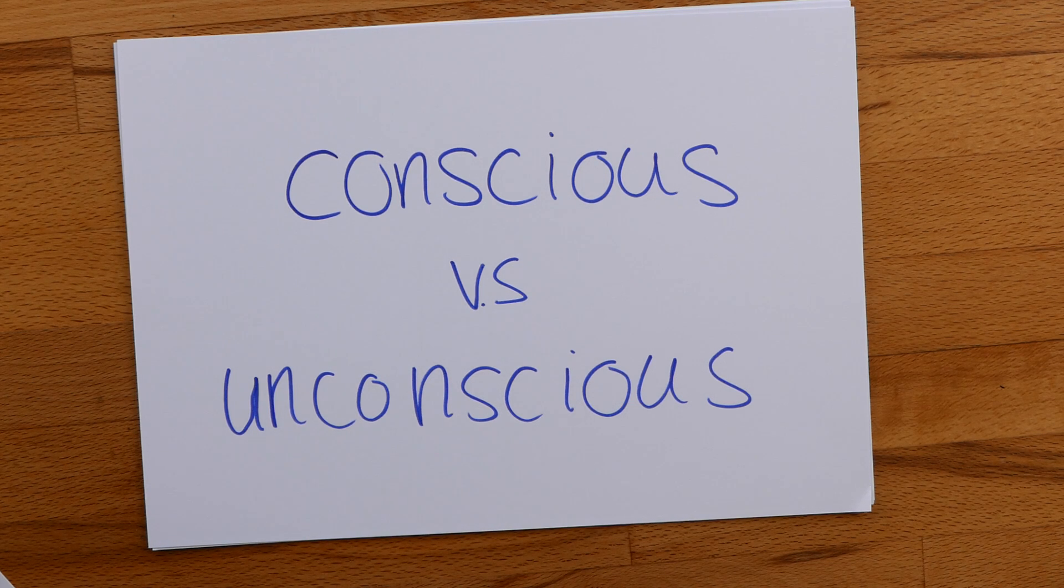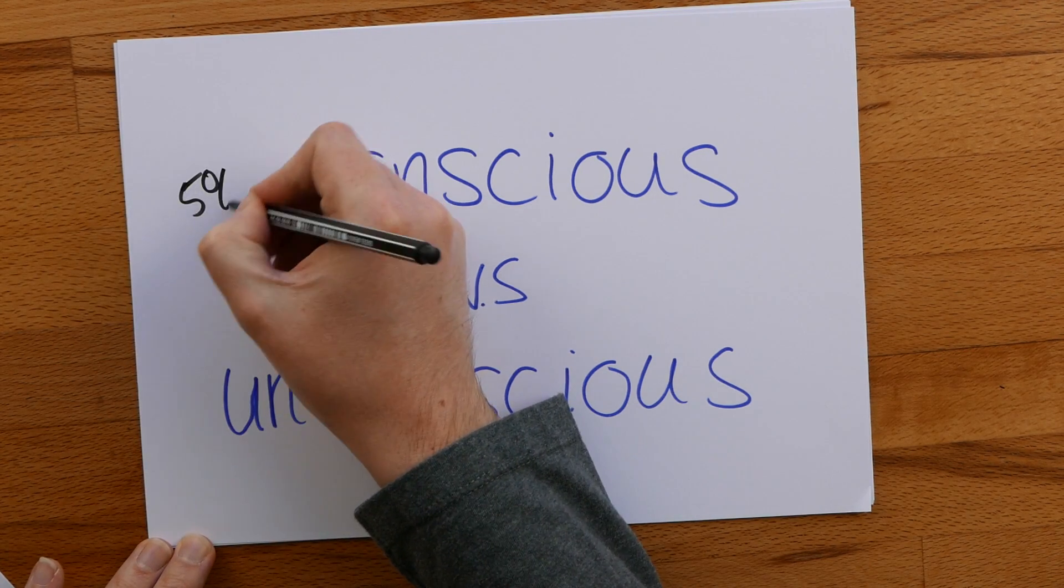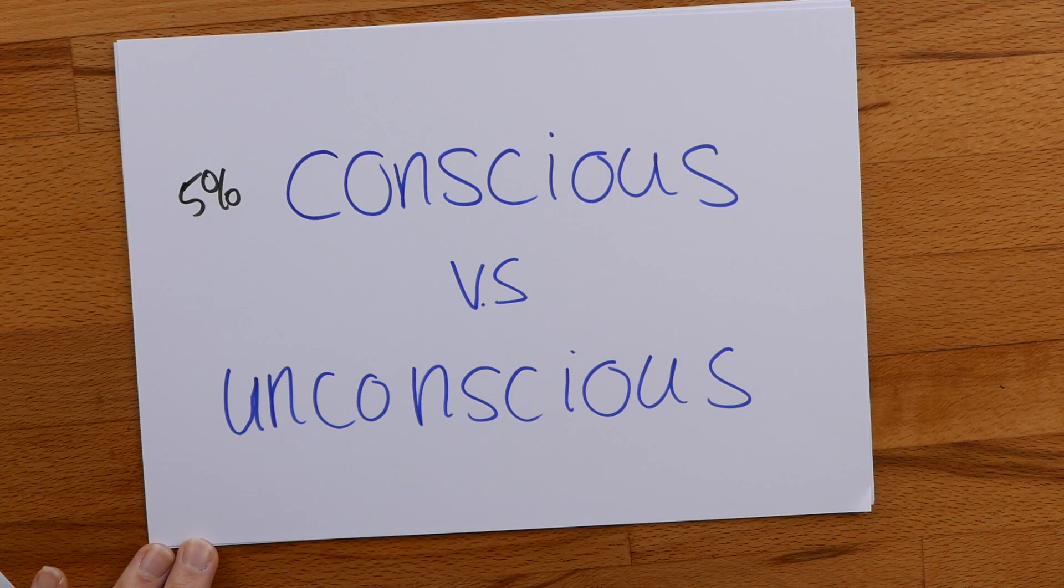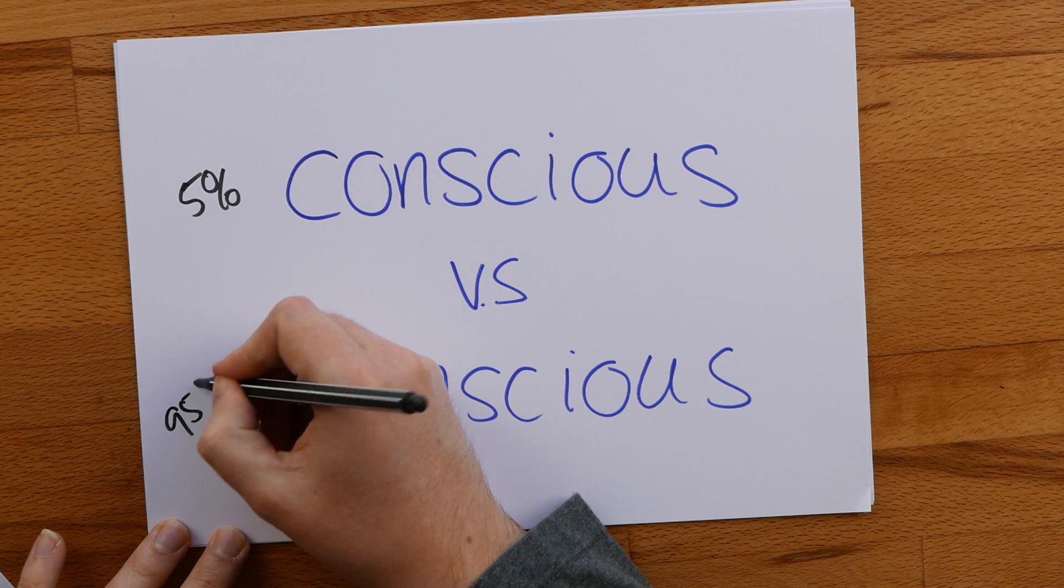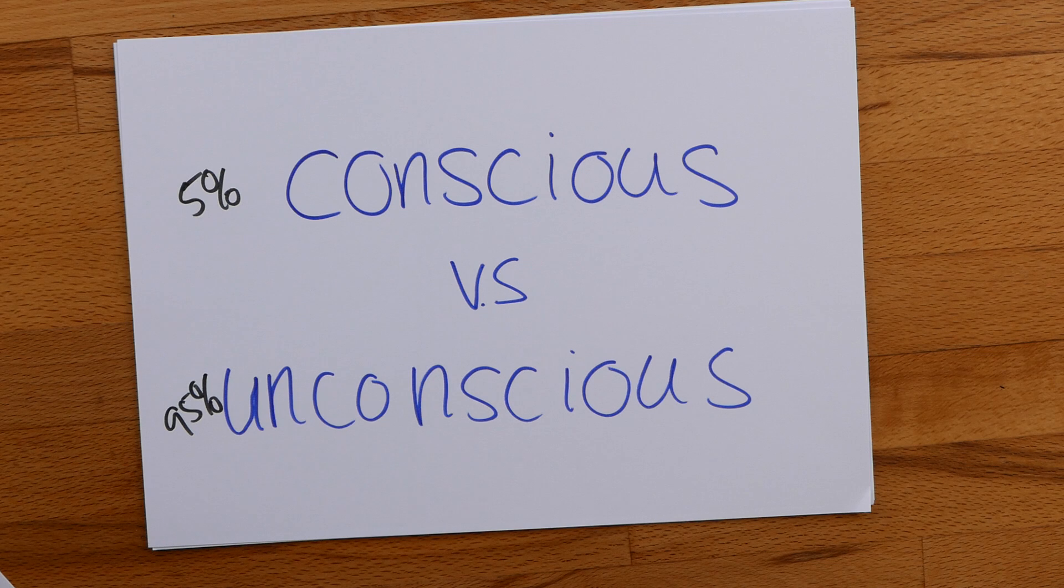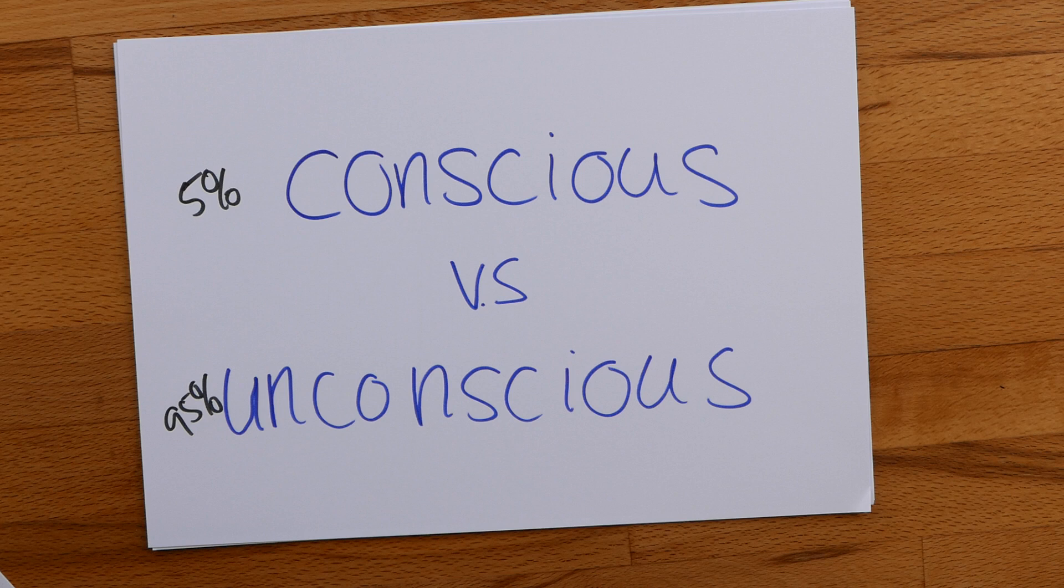We know nowadays that the conscious part of a decision is about 5%, which means the unconscious part is 95%. And that of course is because our brain works mainly unconsciously.